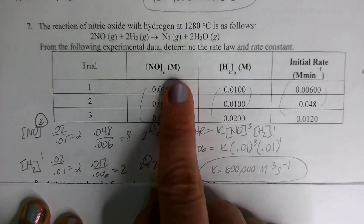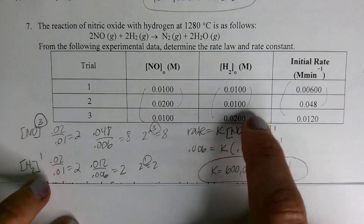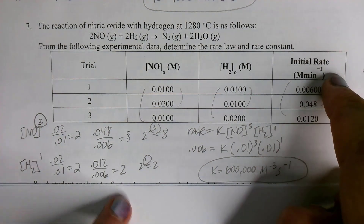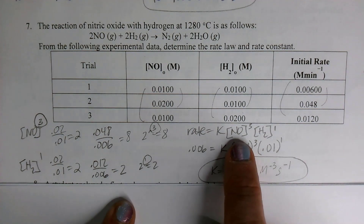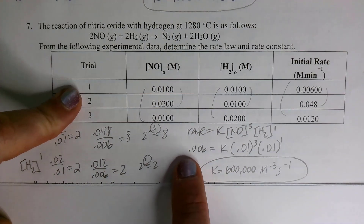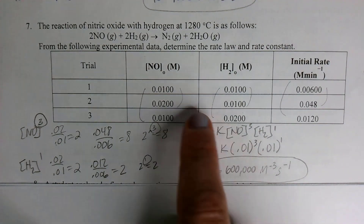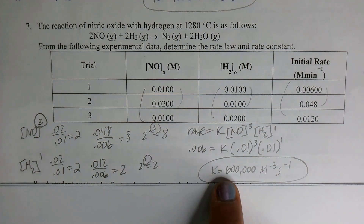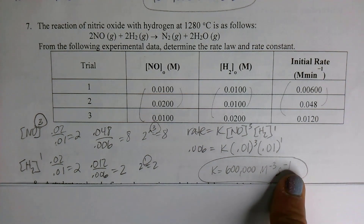For H₂, I need two trials where NO stayed the same — that's trials 1 and 3. Dividing trial 3 by trial 1, concentration doubled and the rate also doubled. Two raised to the 1st power is 2, so H₂ is 1st order. Using trial 1 values: rate equals K times [NO]³ times [H₂]¹. Solving gives K equals 600,000, with units M⁻³·s⁻¹.